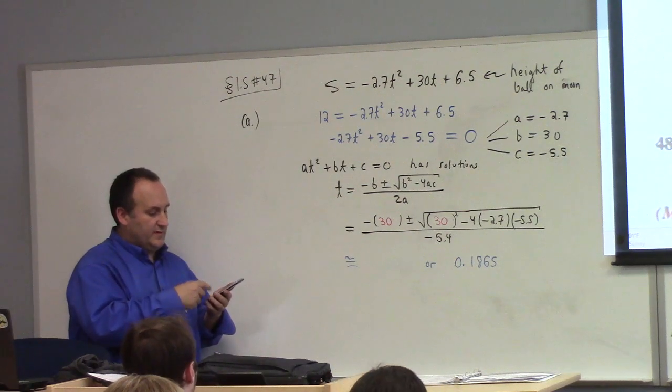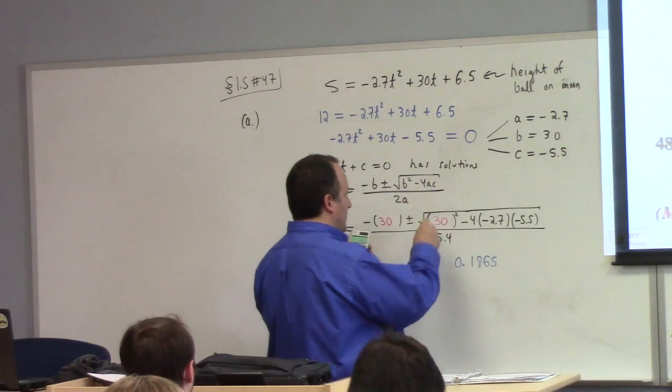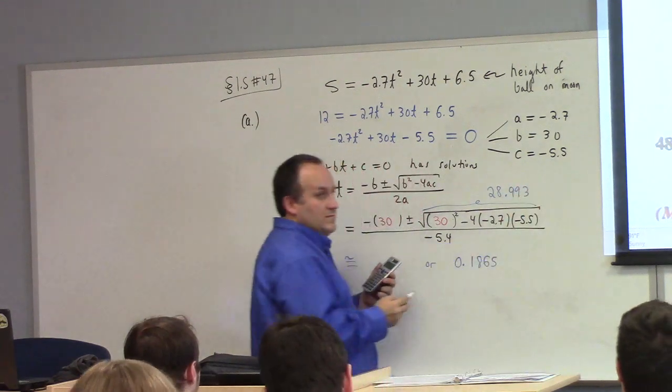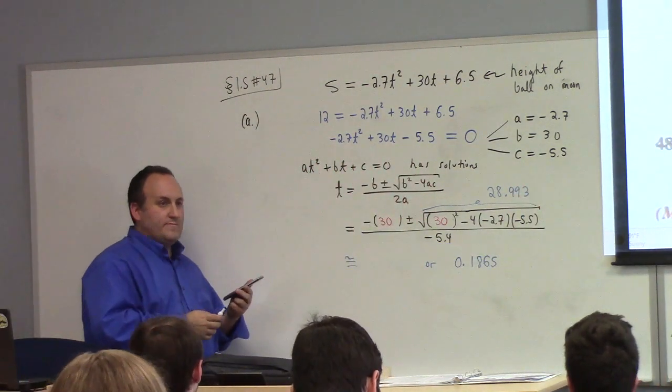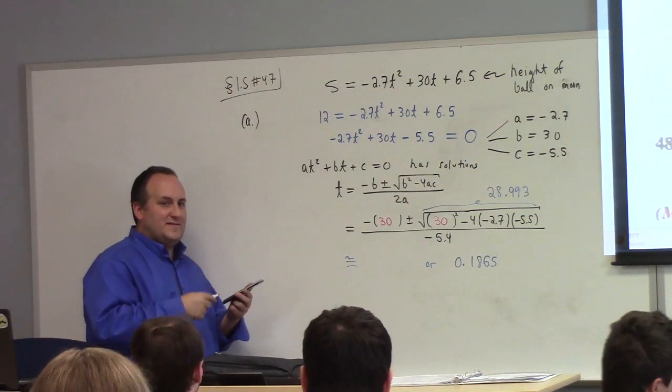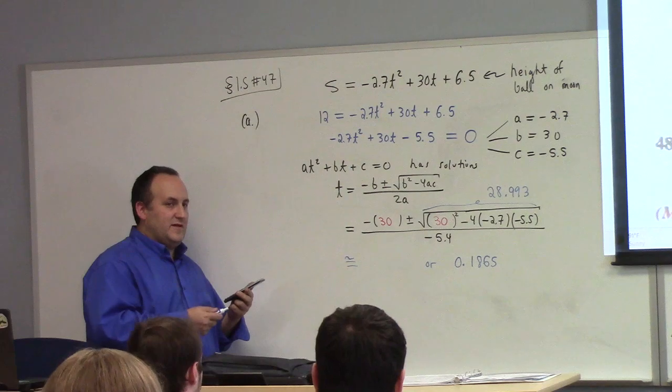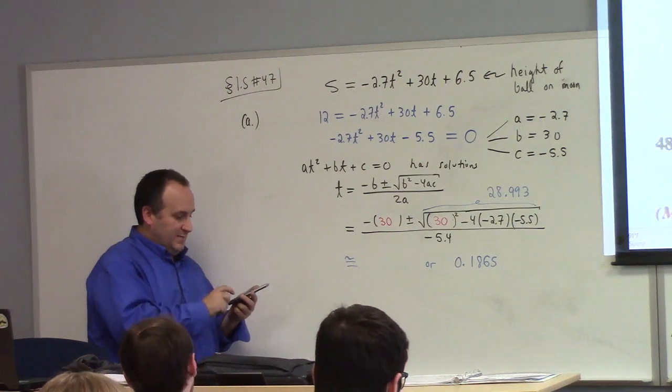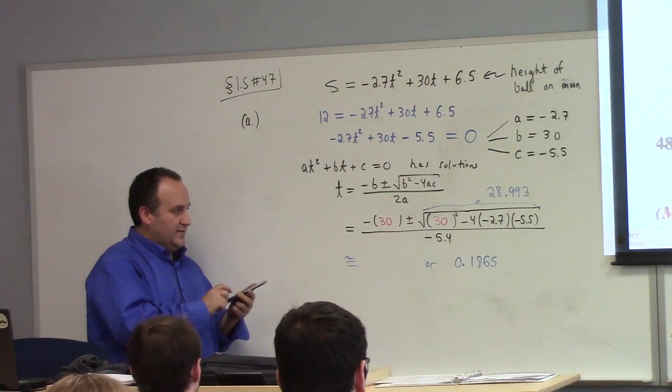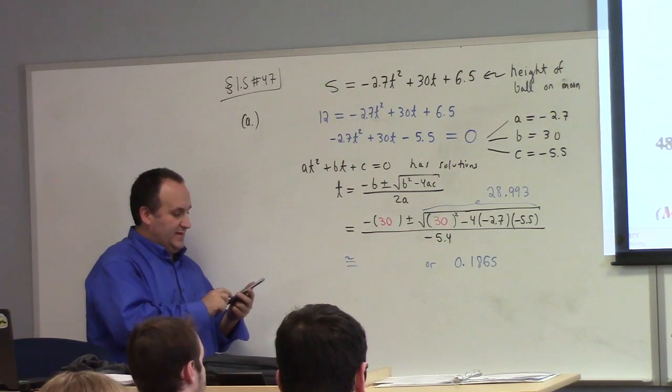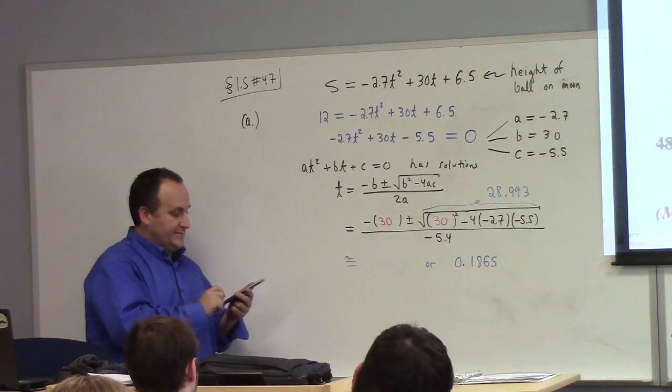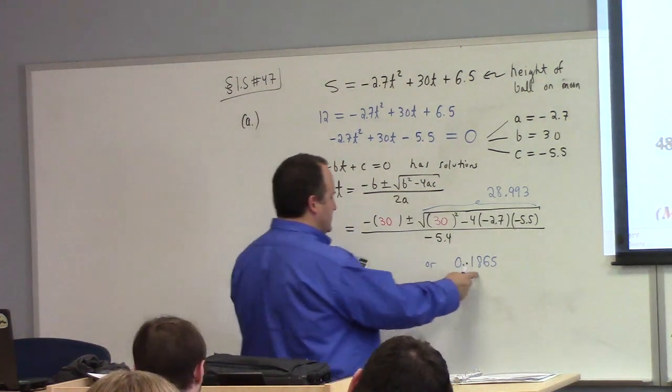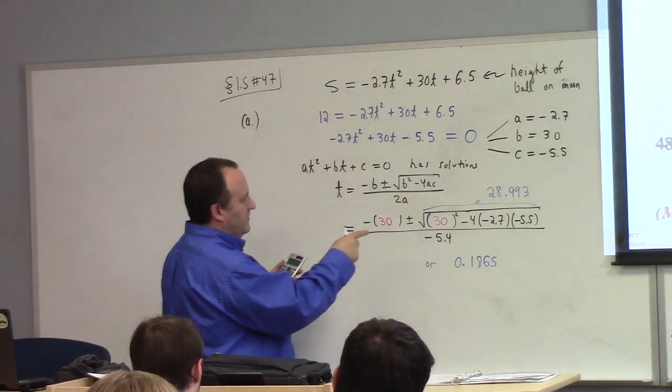The thing under the square root, this number right here, guys, I get 28.993. Do you guys get that? You guys need to be able to do these kind of calculations on the test, which is upcoming. You should be figuring this out alongside. Is this the final answer? You've got to be careful, right? Because that minus 30 is what? If I divide that by 5.4, I get... So, the other one's... I'm an idiot.